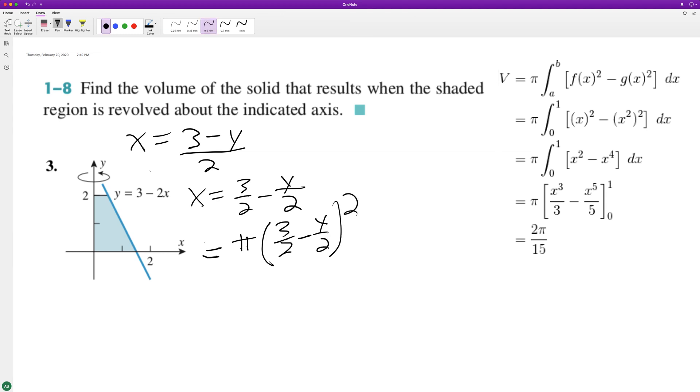So pi times 9 fourths minus 3y over 4, 6y over 4. So 3y over 4, I believe. You know what, screw it, I'll just write what we had. I'm sorry.